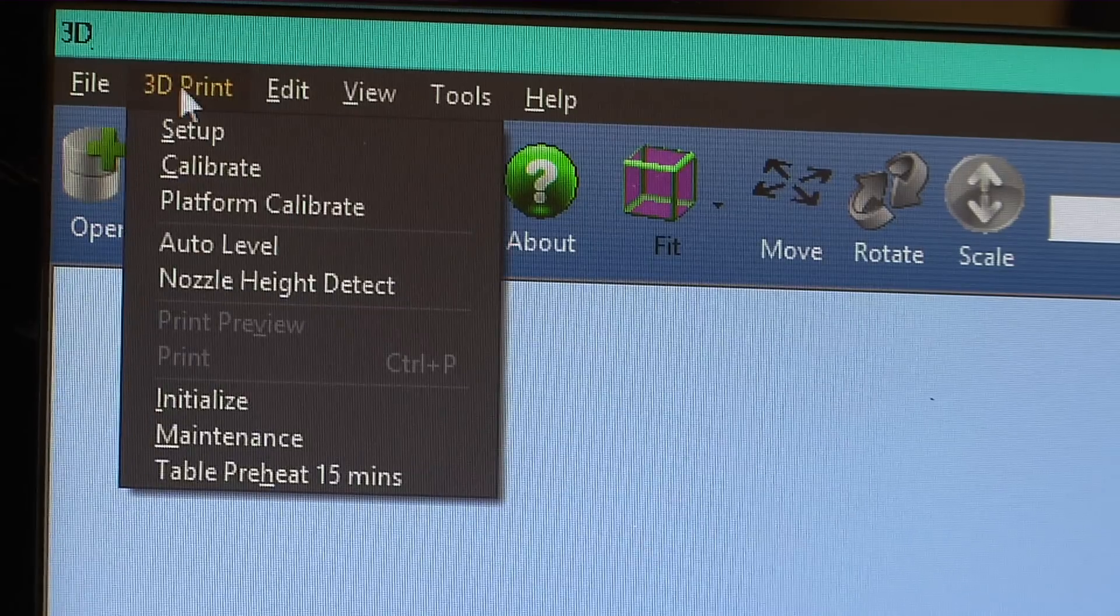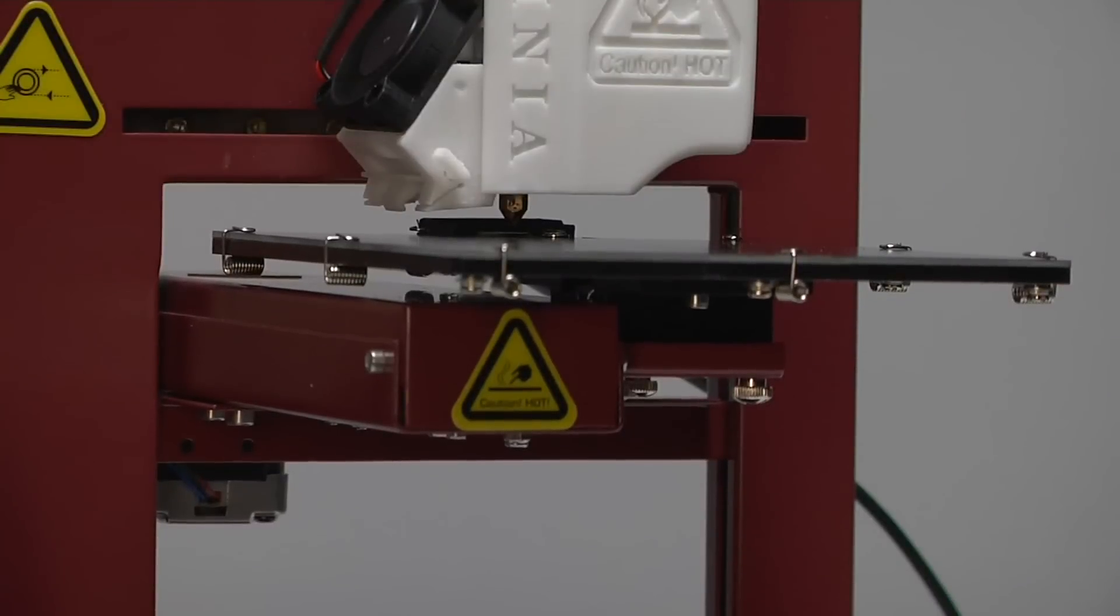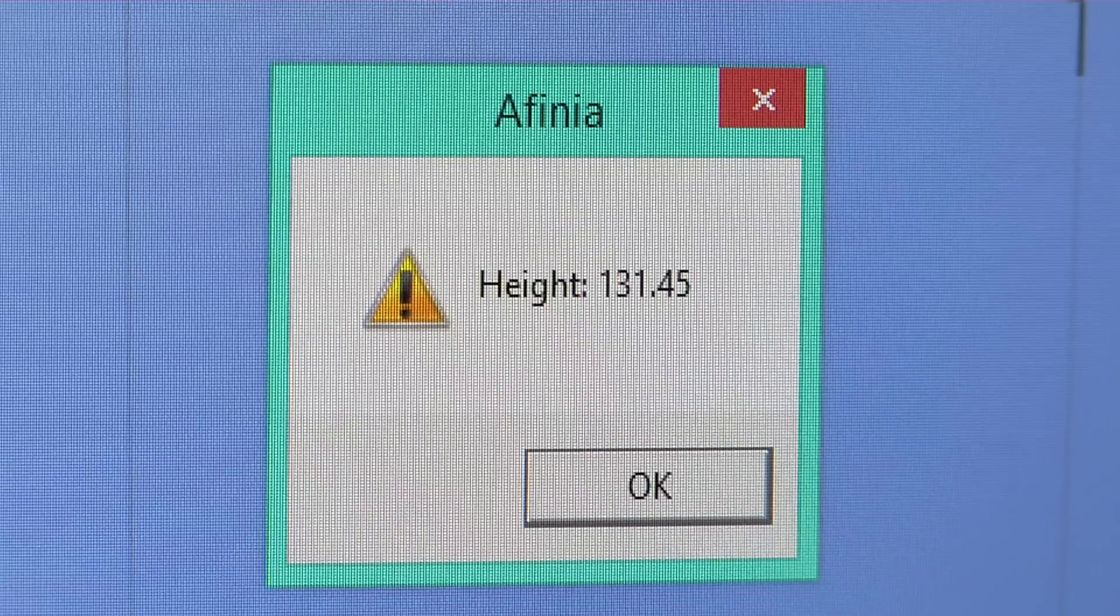Select nozzle height detect from the 3D print menu. The process of nozzle height detection will take about 20 seconds. The software will display the nozzle height. You are now ready to print your first model.